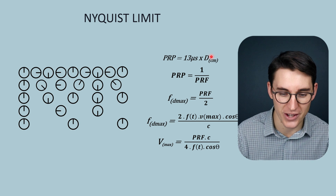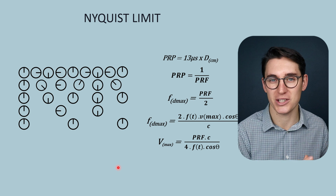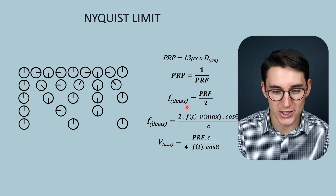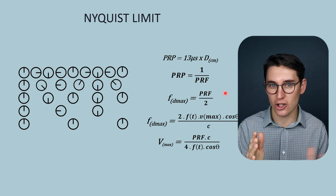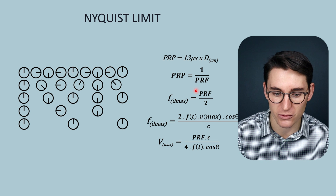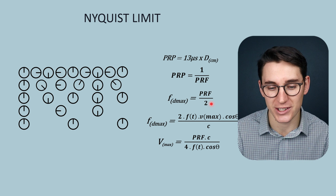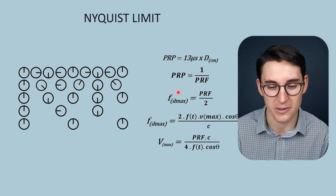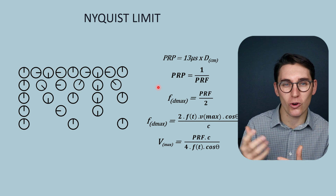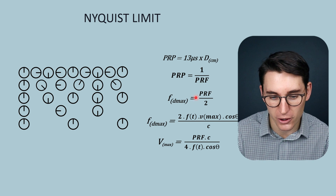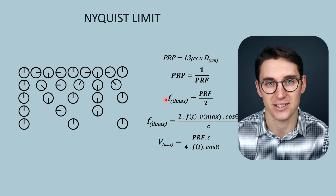Now let's look at the various formulas that describe this Nyquist limit. The equation in the middle represents the Nyquist limit: the sampling frequency — the number of times we sample those returning echoes — is the pulse repetition frequency. The maximum Doppler shift that we can accurately calculate is half of that pulse repetition frequency. Remember, the Doppler shift coming back is much lower than our transducer frequencies — it's coming back in the audible acoustic spectrum. So our pulse repetition frequency needs to be double that of the maximum Doppler shift, otherwise we're going to get aliasing artifact.